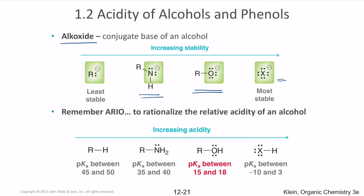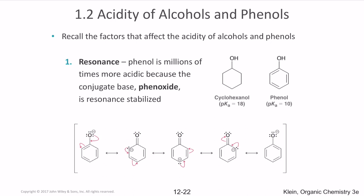Alkoxides are generally stable — more stable than amines or general side chains, but less stable than halogen conjugate bases. We assess relative acidity using the ARIO method (Atom, Resonance, Induction, Orbital). For the atom factor, a larger atom such as oxygen is more stable than nitrogen, which is why alkoxides are more stable than amines.